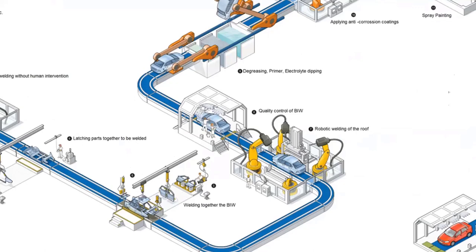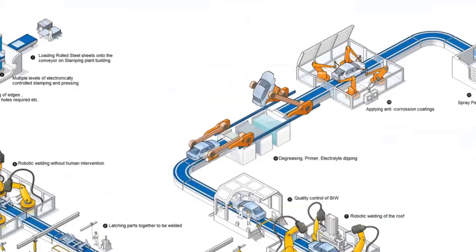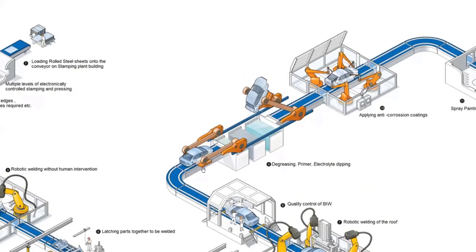This entire shell of the car is called the body in white. There is a quality control check here — a chamber with tube lights all around where people check the quality of the whole body. If successful, it moves further; otherwise the body is rejected at this stage. From here it moves into the paint shop. So you have covered the stamping shop, the body shop, and now it goes to the paint shop.